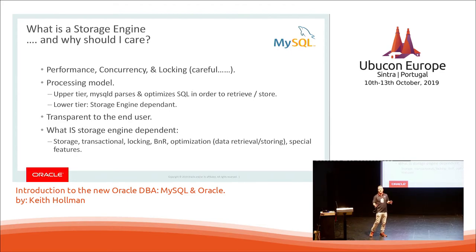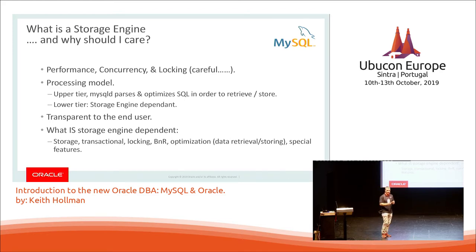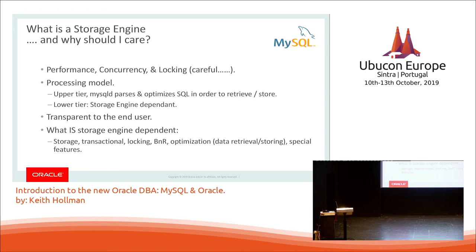What's key about MySQL? What's a major thing? The storage engine — having storage engines, that's the big difference. Being able to store the table in a different format determines what optimization the queries are going to use and therefore how we use the MySQL server. Performance, concurrency, and locking — that depends on what we're doing and how we're going to interact with our data. The processing model: the upper tier is where MySQL parses and optimizes, and the lower tier is the storage engine — Memory, InnoDB, MyISAM — that determines how we will work.